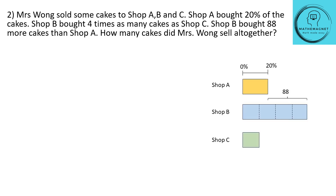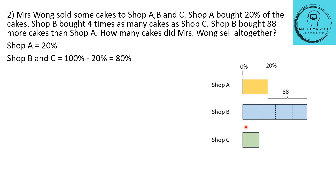Shop A bought 20% and the remaining was bought by B and C. Shop B bought four times as much as shop C, so shop C has 1 unit and shop B has 4 units. Shop B bought 88 more cakes than shop A. The unit relation is only between B and C — you cannot compare units between A and B directly. But we know shop B bought 88 more cakes than shop A.